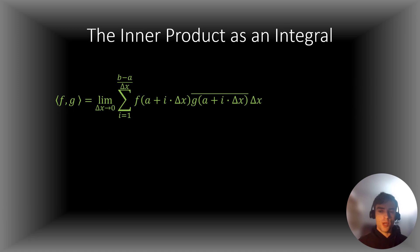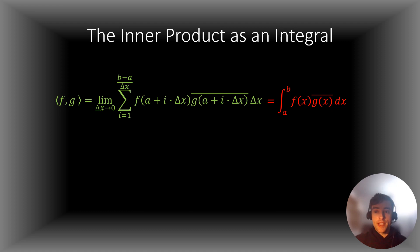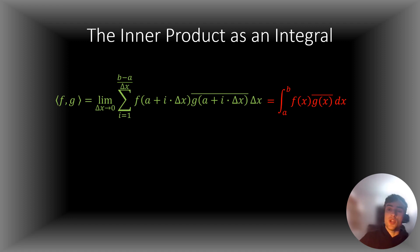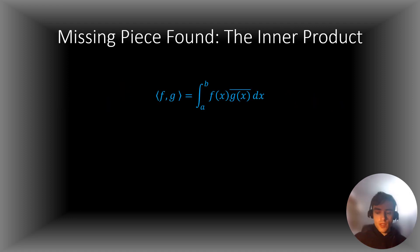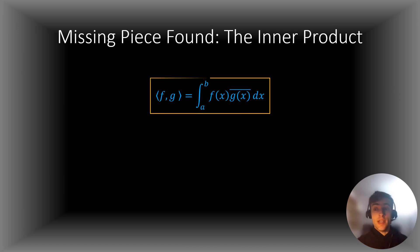So if we look at this inner product closely, we may recognize it as a very special type of summation called an integral. Specifically, it is the integral from x equals a to x equals b of f of x multiplied by the complex conjugate of g of x. Right there. And so here is the inner product in its final form, and we will use this inner product for the rest of this video.